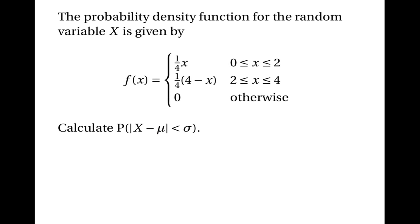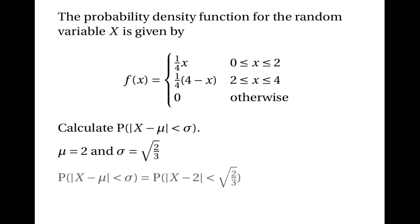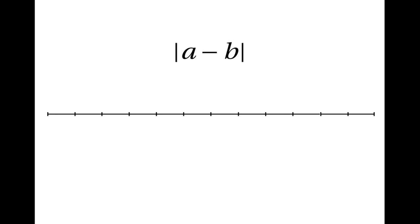Now let's calculate the probability that |X − mean| < standard deviation. Questions of this sort come up quite frequently in A-level exams. The mean is 2 and the standard deviation is √(2/3), so we want P(|X − 2| < √(2/3)). Before proceeding, let's think about what the modulus |a − b| means geometrically in terms of a number line.